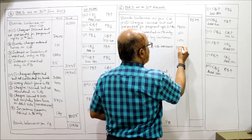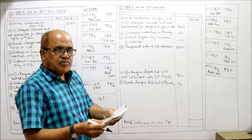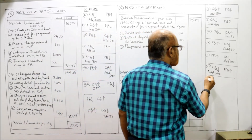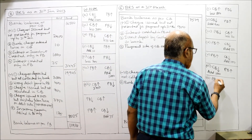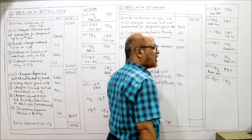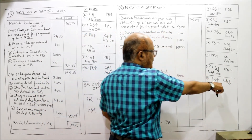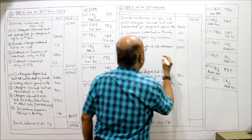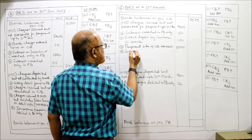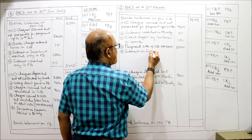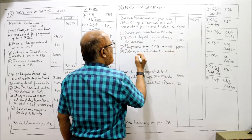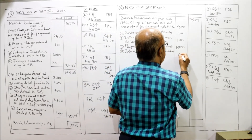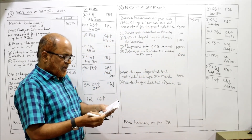Seventh item: interest on investment amounting to rupees 200 collected by the bank appears in the pass book. Pass book shows more balance; cash book shows less because it is not recorded there. Our starting point, the cash book, shows less balance, so we add. Add: interest on investment credited in pass book only — rupees 200.